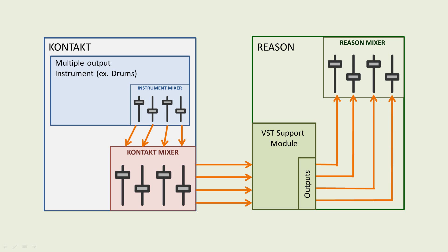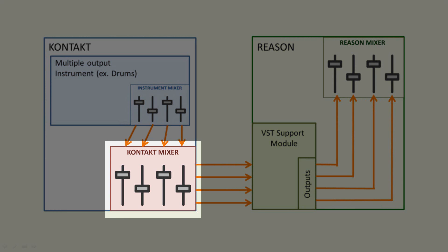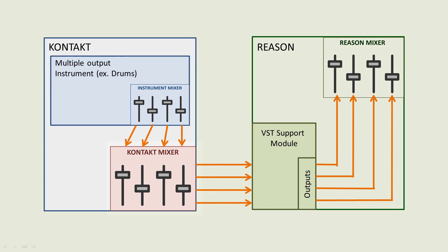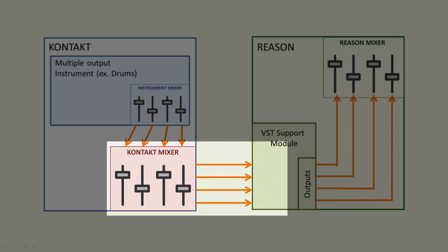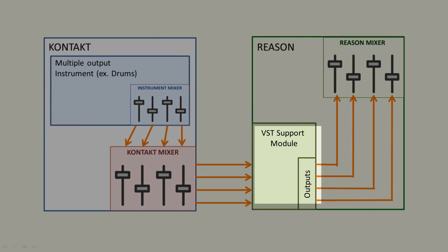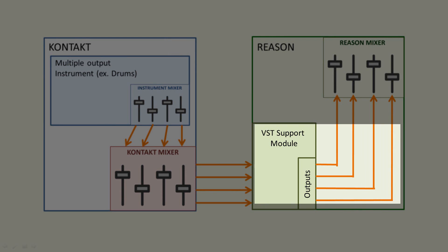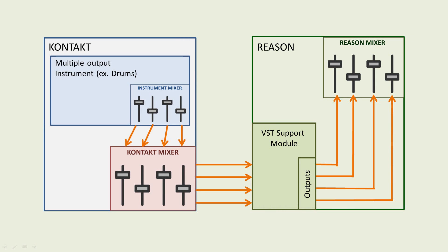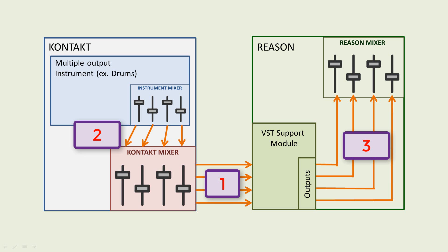This instrument mixer is the output of the virtual instrument and needs to be connected to the output of Contact. So Contact also has a mixer included. We need to make the correlation between the different tracks of the instrument and the tracks in Contact. The output of the Contact mixer will go into the VST support module. The outputs of the VST support module correspond, one by one, to the various outputs of Contact and therefore of the instrument mixer. To the outputs of the VST support module, we can connect mixer channels corresponding to slices in our SSL simulation in Reason.